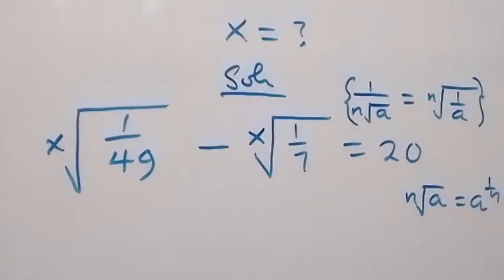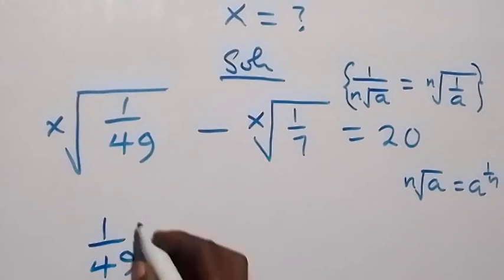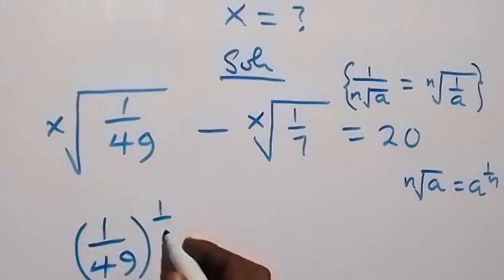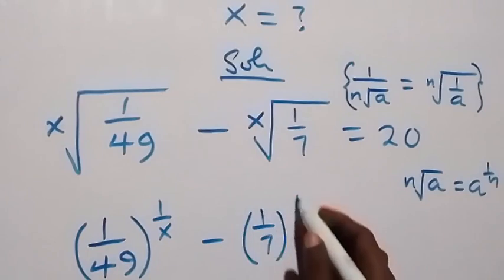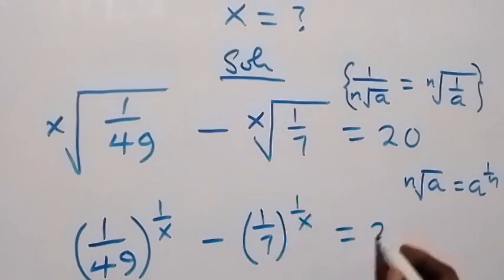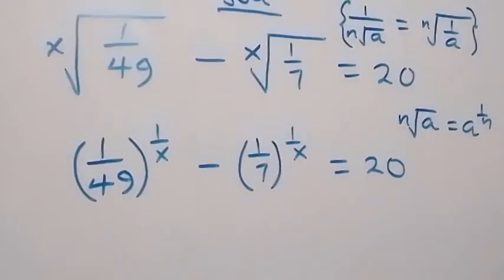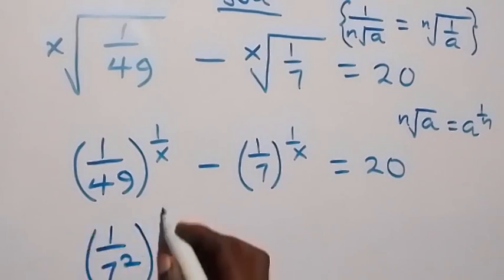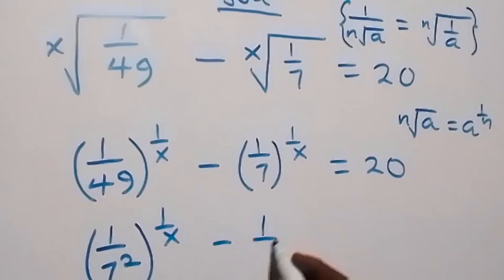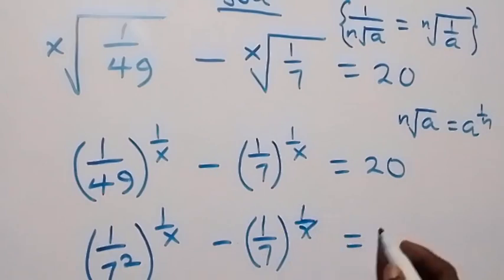We can also use the relation that the nth root of a is the same thing as a raised to the power 1 over n. Applying this, we have (1/49) raised to the power 1 over x, minus (1/7) raised to the power 1 over x, equals 20. We can express 49 as 7 squared, so we have (1/7²) raised to the power 1 over x, minus (1/7) raised to the power 1 over x, equals 20.